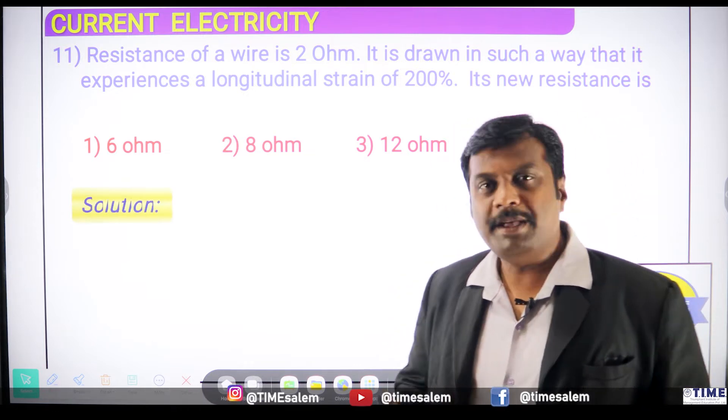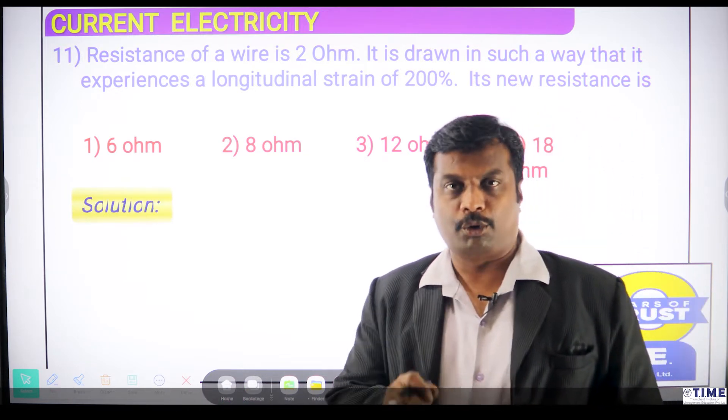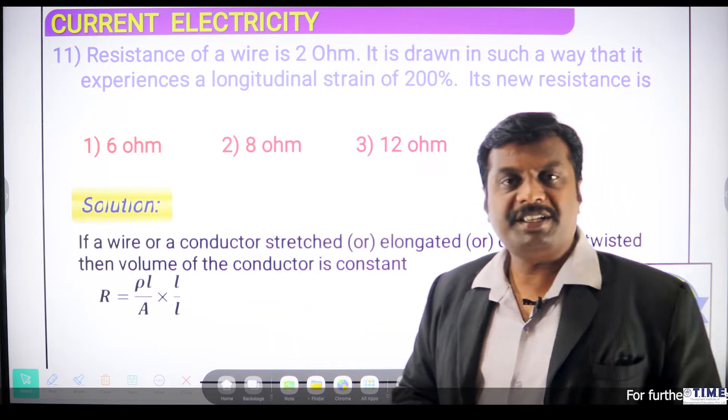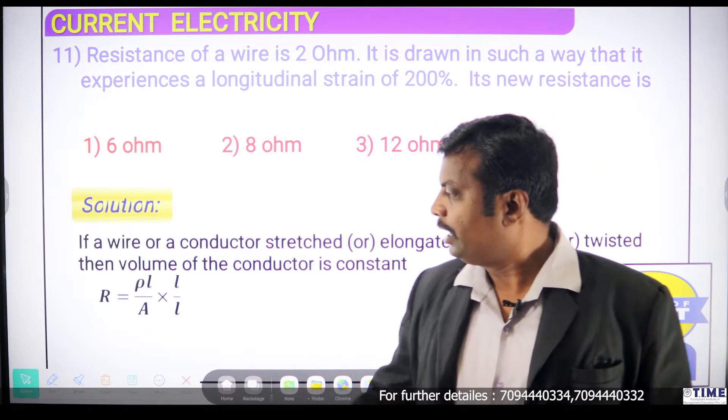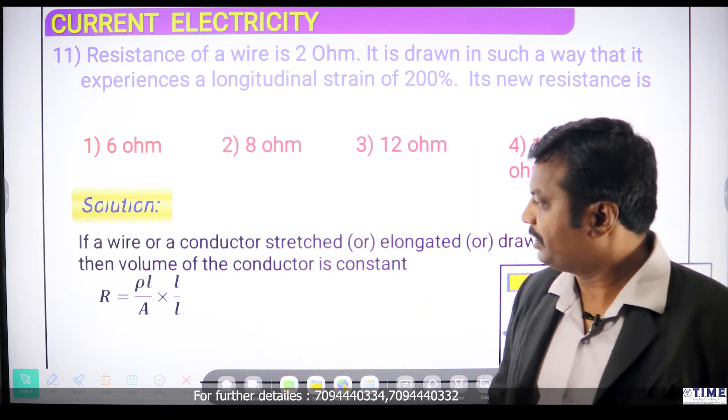Let us look at the solution. Basically, we know the formula R is equal to ρL by A, where ρ is resistivity of the material. R is the resistance, 2 ohm, and you have got L which is length of the wire, A is area of cross-section.